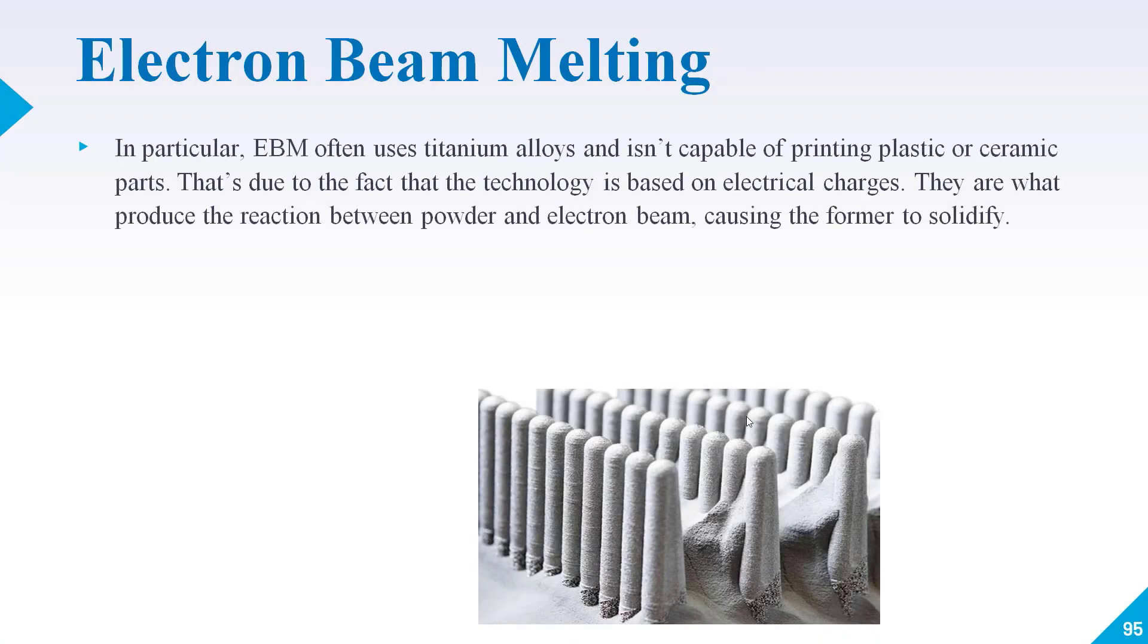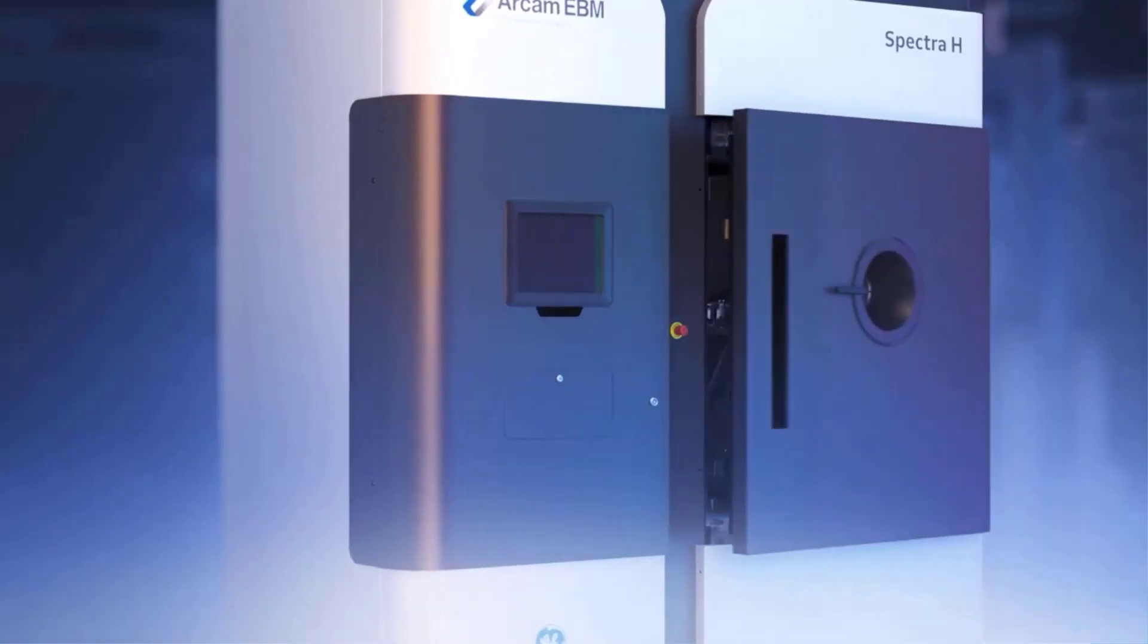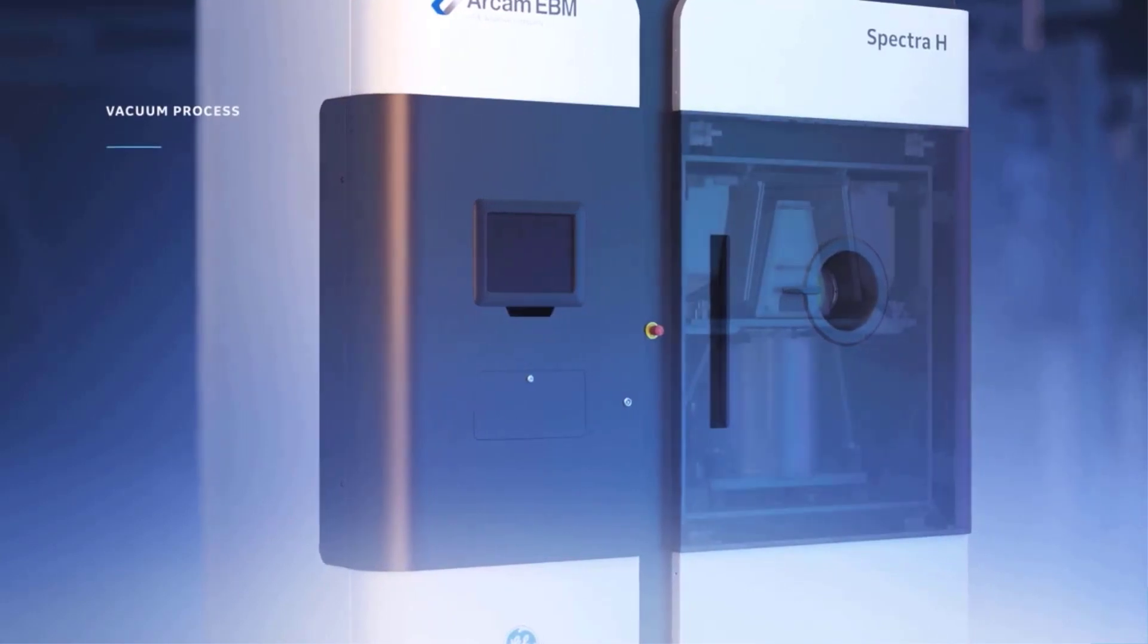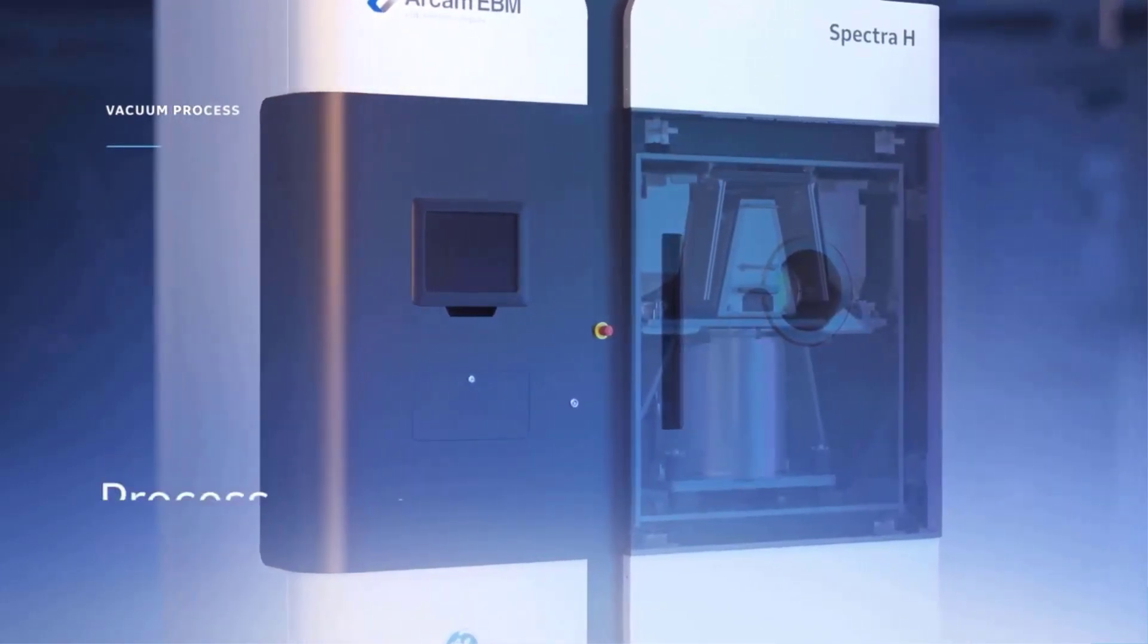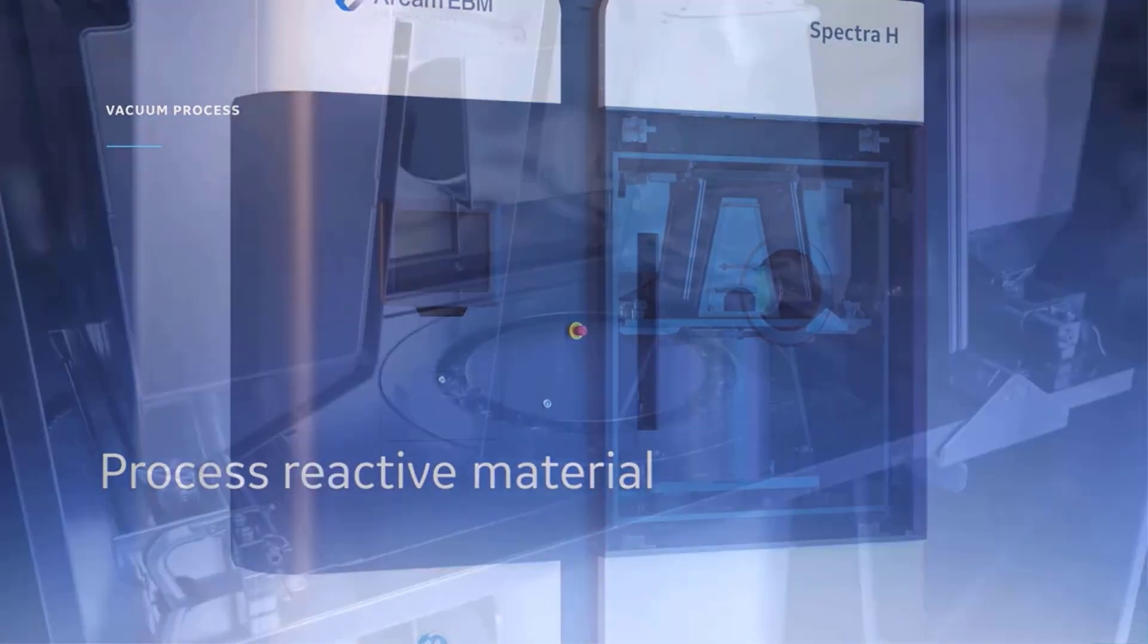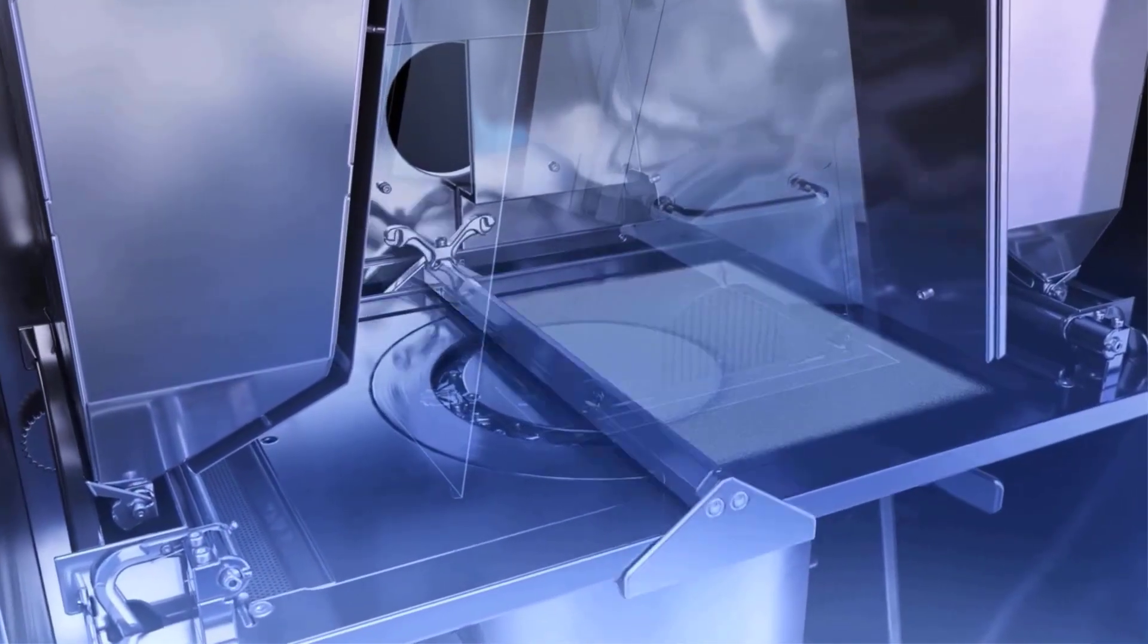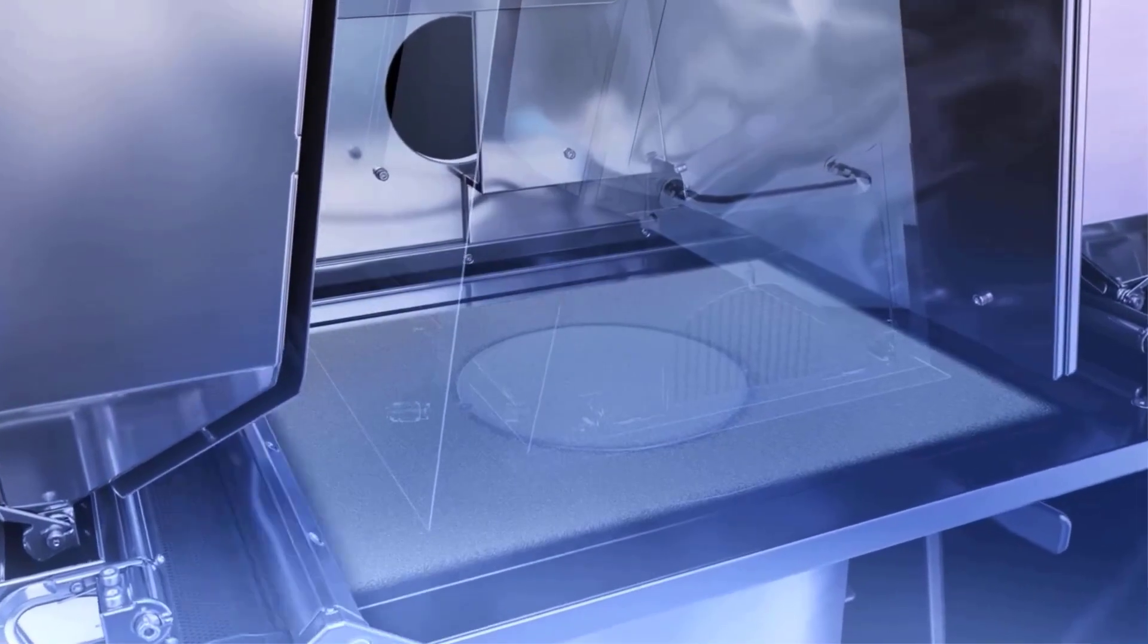As I told you, electron beam melting is only for metals like titanium alloys and all, but we cannot use it for printing plastic or ceramic parts. That's due to the fact that the technology is based on electrical charges and the reaction between powder and electron beam causing it to solidify.